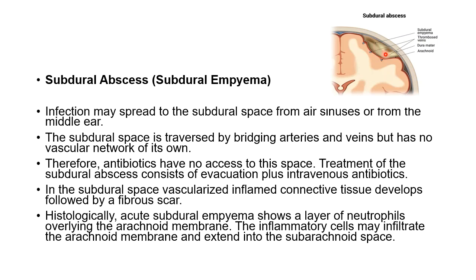Histologically, an acute subdural empyema shows a layer of neutrophils overlying the arachnoid matter. The inflammatory cells may infiltrate the arachnoid membrane and extend into the subarachnoid space as well. As you can see, this is the subdural abscess with the subdural space filled with infected material. Microscopically, it consists of neutrophils overlying the arachnoid membrane, and the inflammatory cells can also infiltrate into the subarachnoid space.